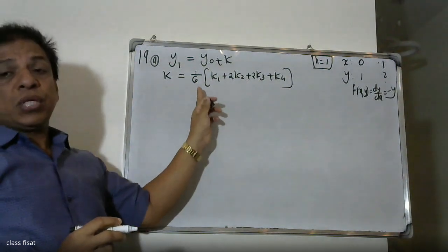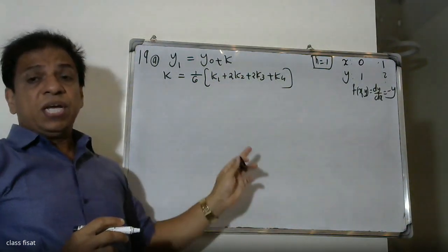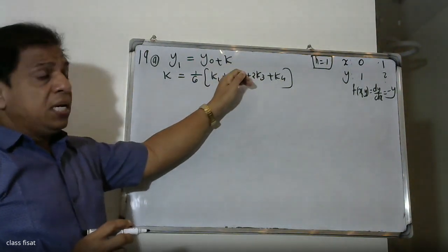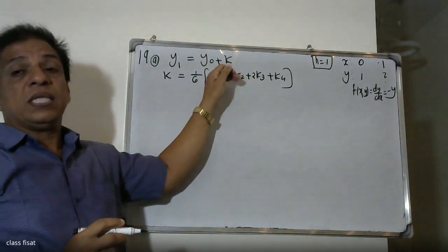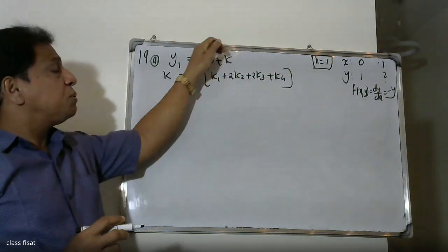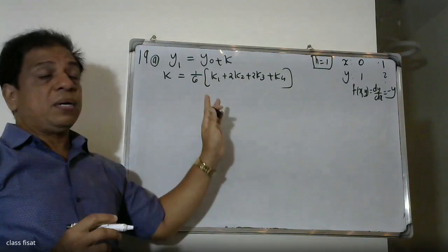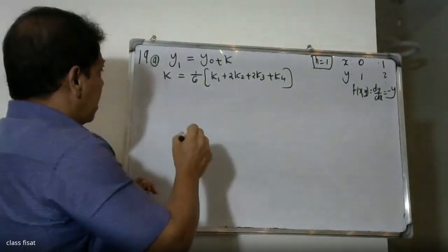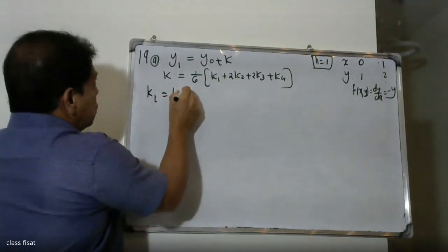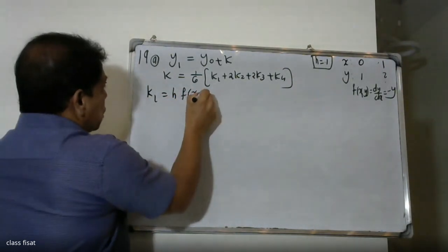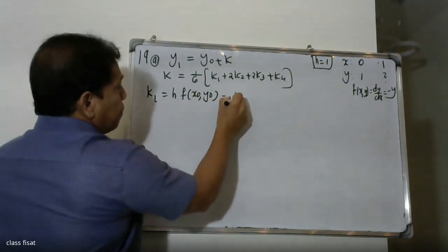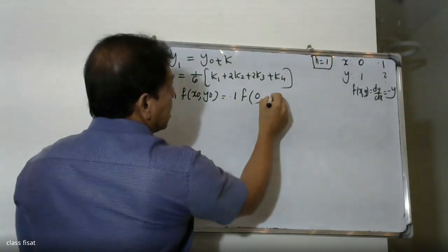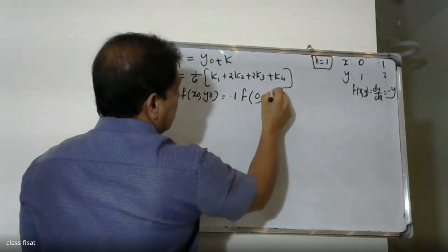The 4th order Runge-Kutta formula is: y1 = y0 + (1/6)(k1 + 2k2 + 2k3 + k4). The initial values are: y0 = 1.